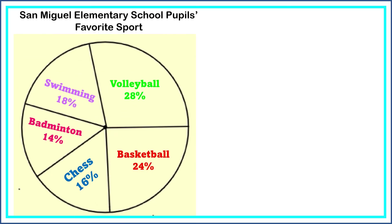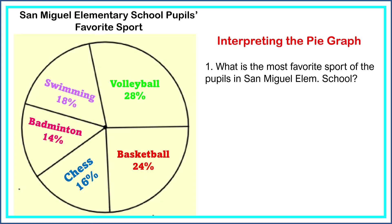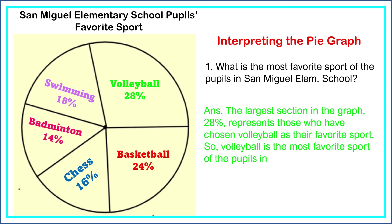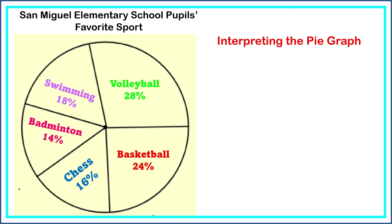This is how we construct a pie graph. Now let's interpret the graph by answering some questions. What is the most favorite sport of the pupils in San Miguel Elementary School? The largest section in the graph, 28%, represents those who chose volleyball as their favorite sport. So volleyball is the most favorite sport of the pupils in San Miguel Elementary School.